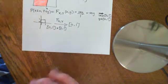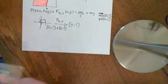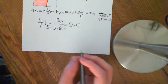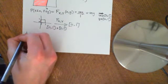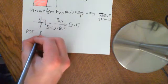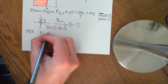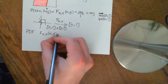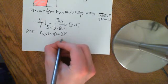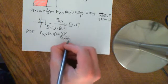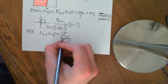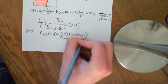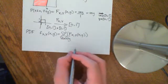Now let's cover the concept of a joint PDF. It's completely analogous to the PDF in just a single random variable. The joint PDF, given the symbol little f of x and y, is a function of R2. It's just the second derivative with respect to x and with respect to y — so you differentiate twice, once with respect to y and once partially with respect to x, of the joint CDF. That's how you get the joint probability density function.